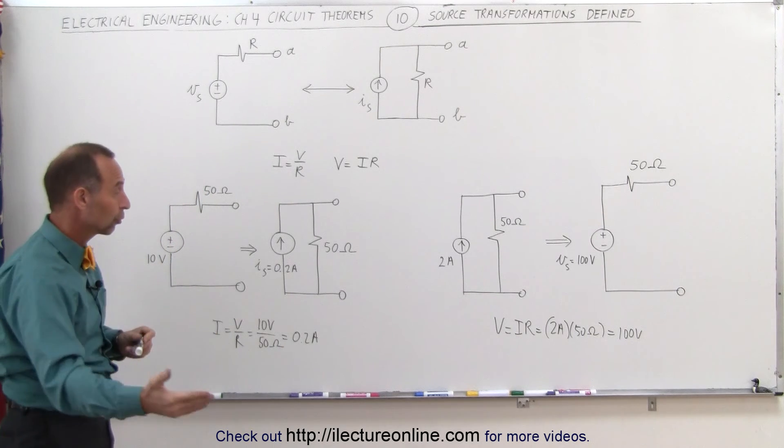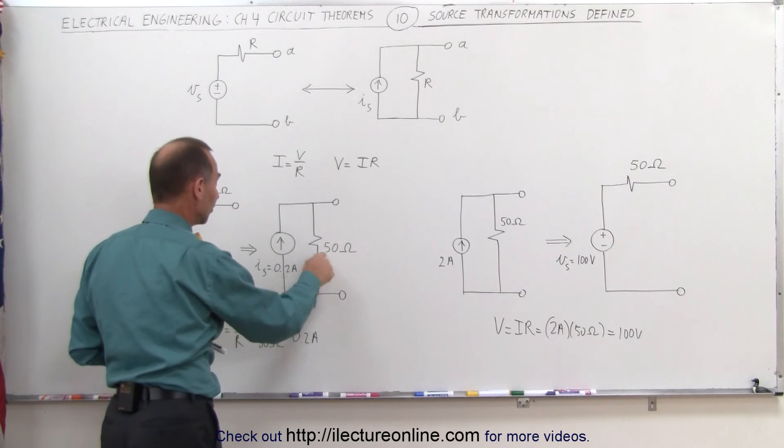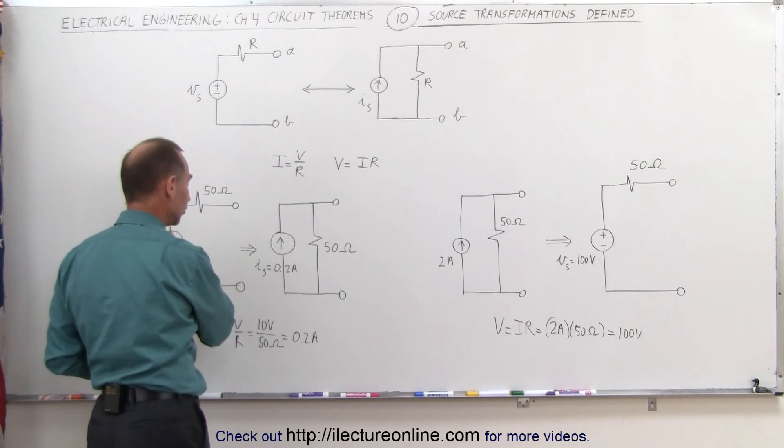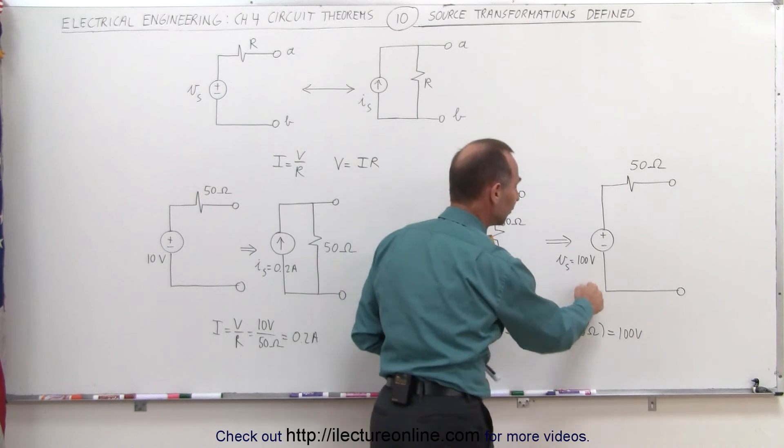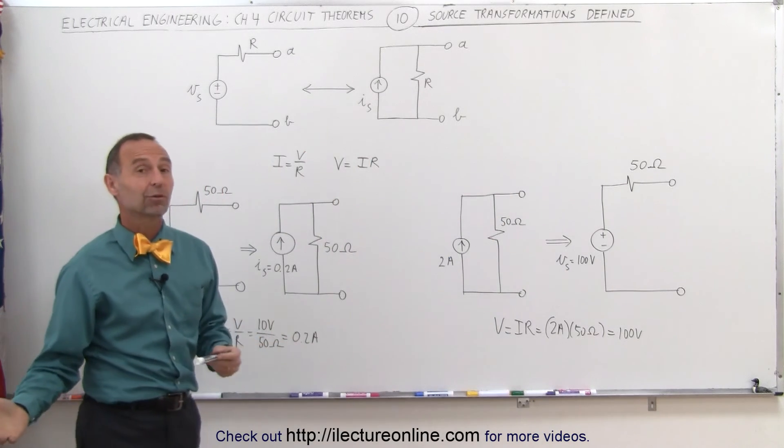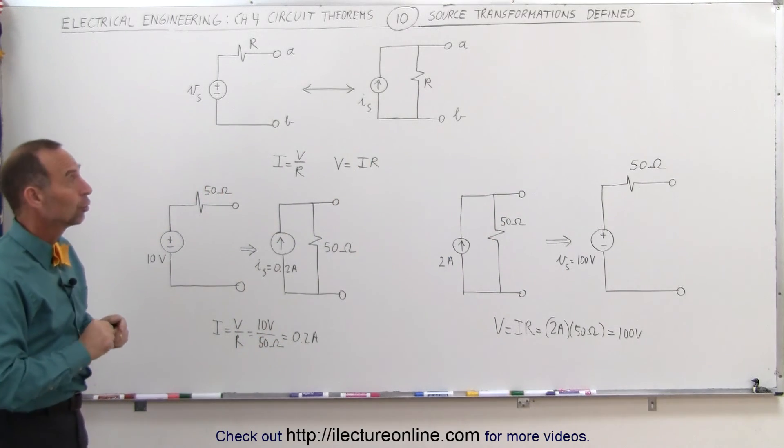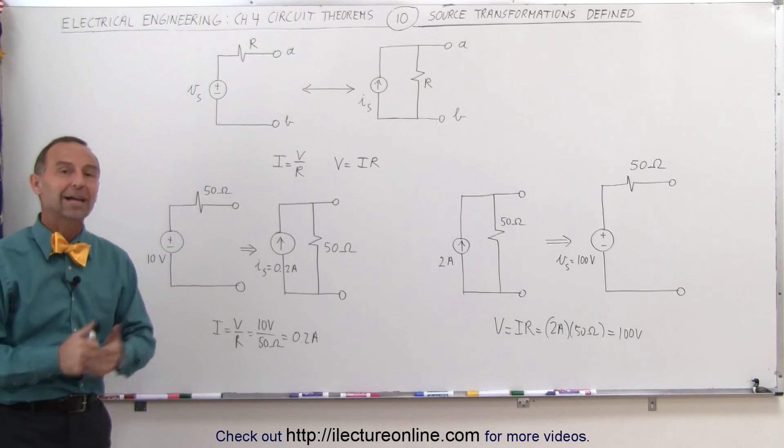When you go from the current source to the voltage source, multiply the resistance times the current, and you get the voltage. Multiply the resistance times the current, and you get the voltage. And that's how we transform from a voltage source circuit to a current source circuit, and back and forth.